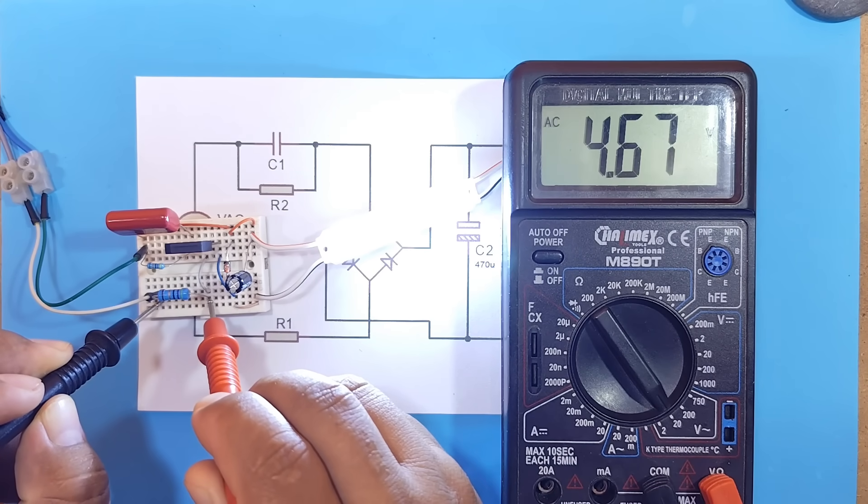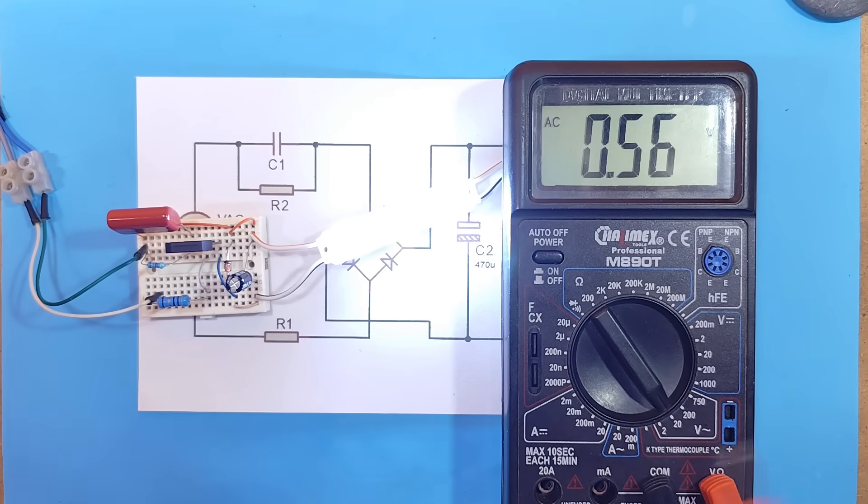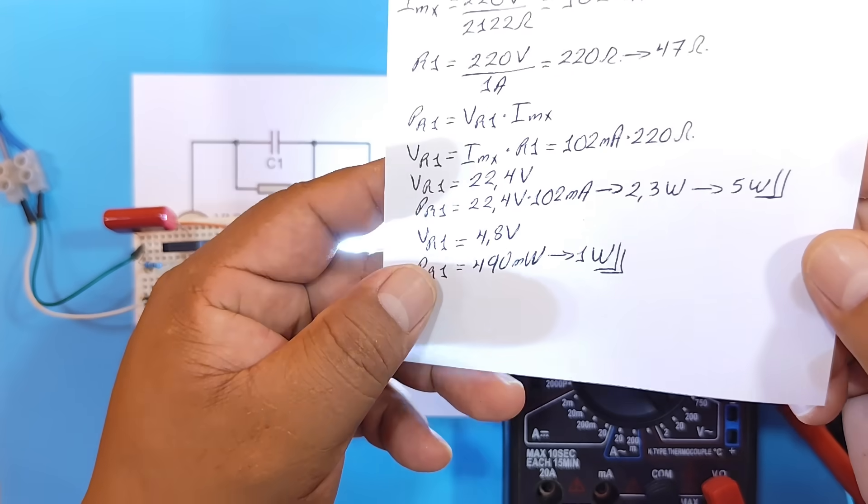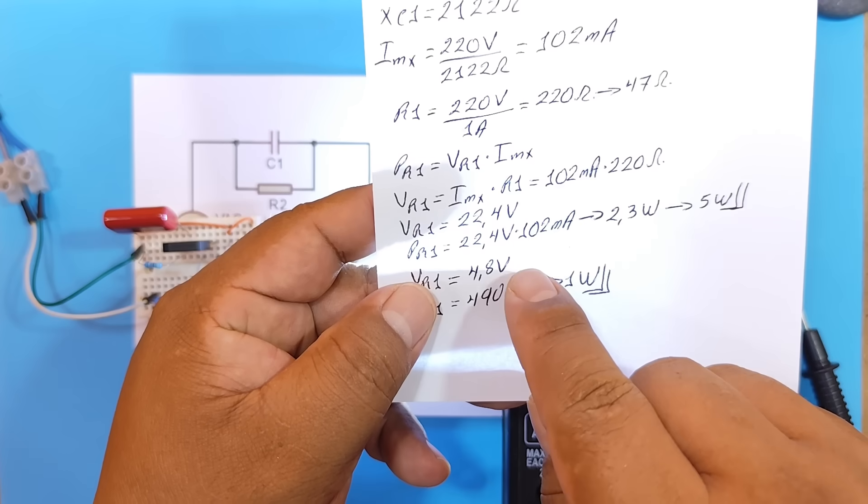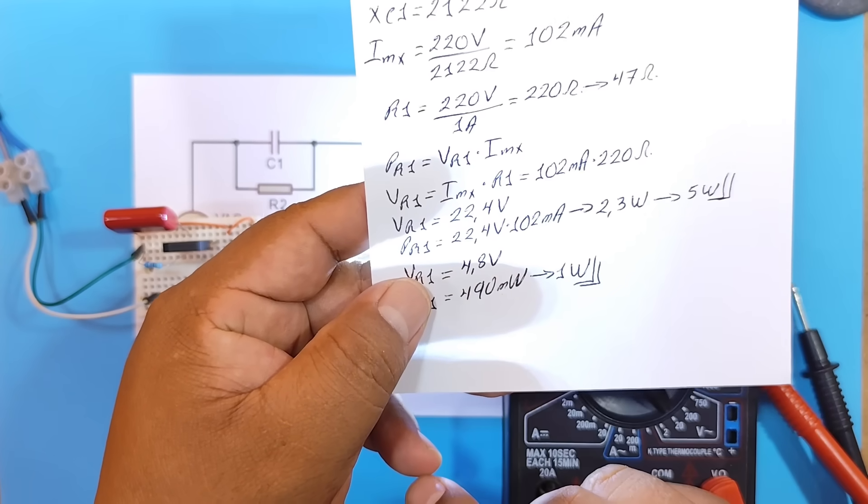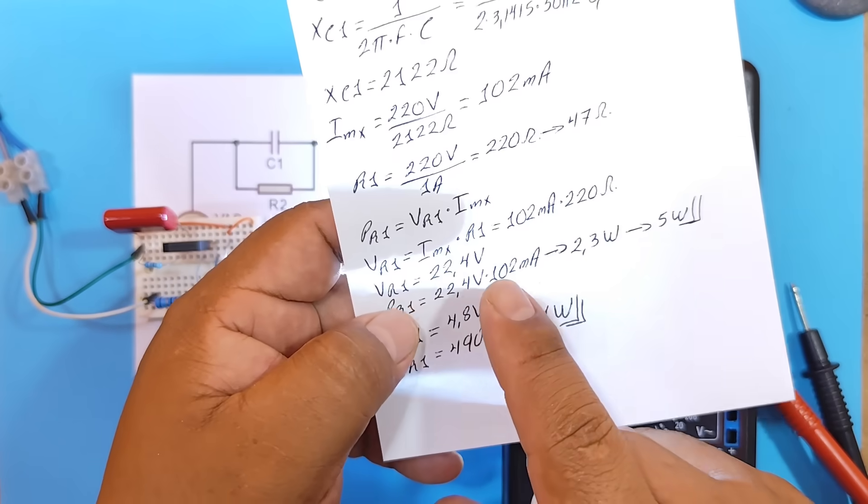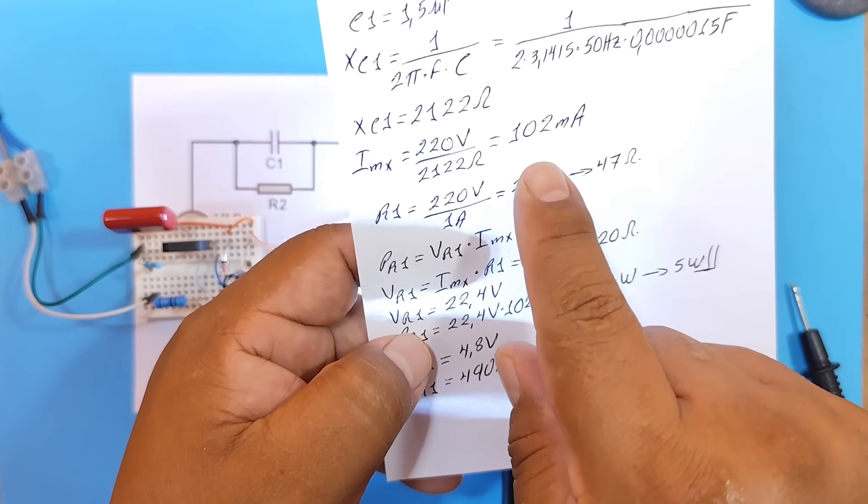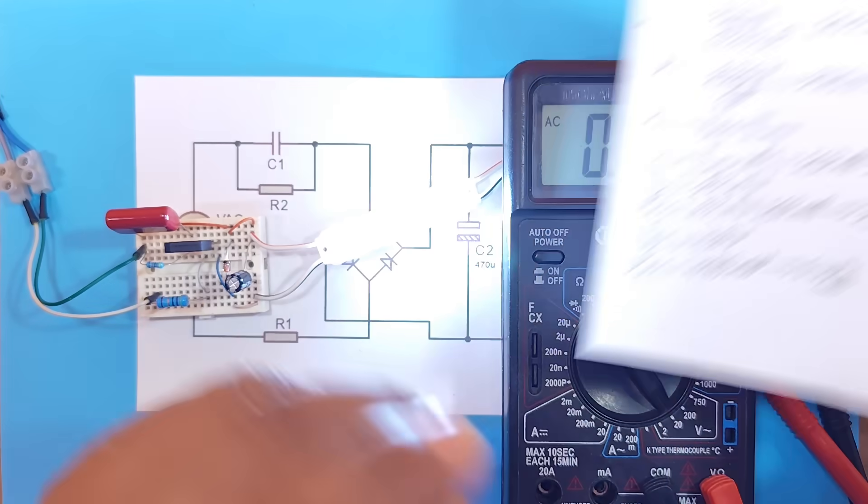We have 4.7 volts across R1. And according to our calculations, we should have 4.8 volts. However, it's quite approximate.